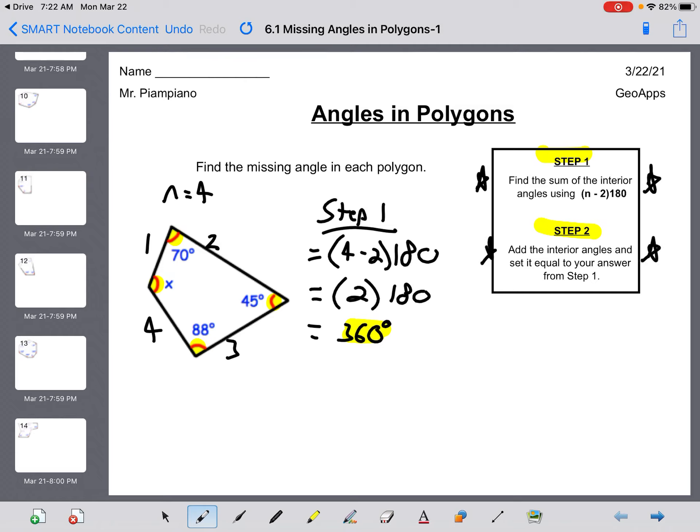Step 2, add the interior angles and set it equal to your answer from step 1. So the first thing we have is X plus I'm going to add 70, 45, and 88 in my calculator. 70 plus 45 plus 88 gives me 203, and that needs to equal 360 degrees. I'm going to subtract 203 using inverse properties, and X equals 360 minus 203 is 157 degrees.